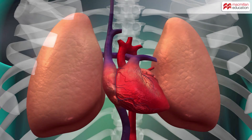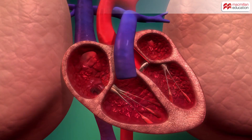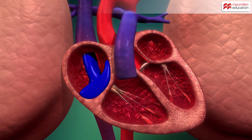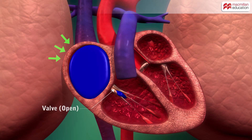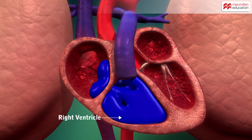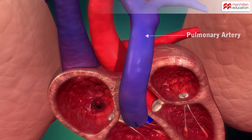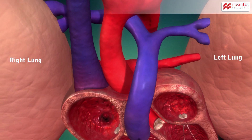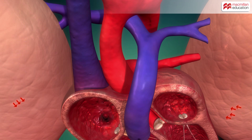The carbon dioxide-rich blood is collected from different parts of the body and brought to the right atrium. Blood then passes through a valve to the right ventricle, which pushes it through the pulmonary artery to the lungs. In the lungs, the carbon dioxide-rich blood comes in contact with inhaled air, picks up oxygen, and loses carbon dioxide.